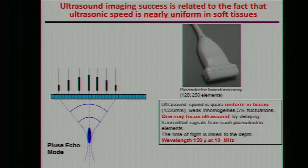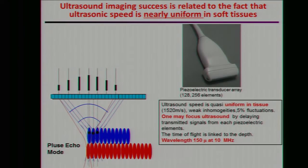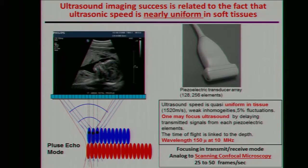To make an image, you usually send a pulse, recall the echo, send another pulse, and continue — this takes some time. You also have to change the focal depth to obtain echoes from other positions. Taking into account the speed of ultrasound, this is typically 50 frames per second, which is not bad. You focus both in transmit and receive, which is the analog of scanning confocal microscopy, but for ultrasound.